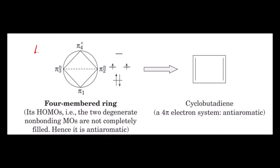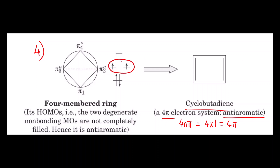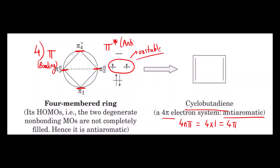For the four-membered ring, the example is cyclobutadiene. It is a four pi electron system, following the 4n pi electron rule (n=1), so it is anti-aromatic and unstable. You can see the presence of a diradical, which makes the molecule unstable. In the Frost Circle diagram, one molecular orbital is at the base, two are in the middle, and one is at the top. Pi represents bonding MOs and pi-star (π*) represents anti-bonding MOs.